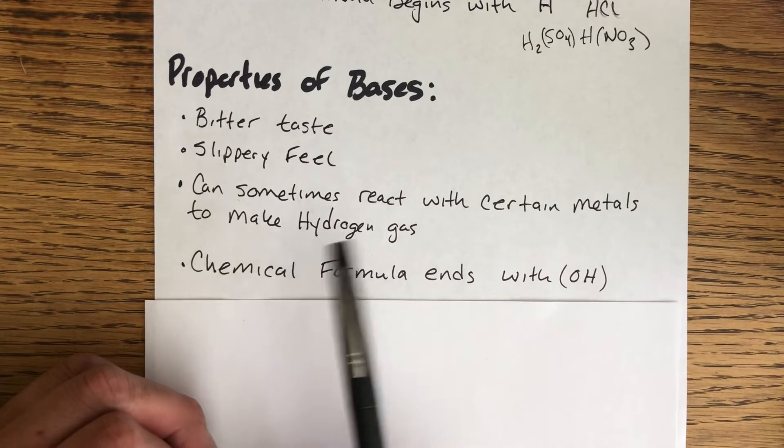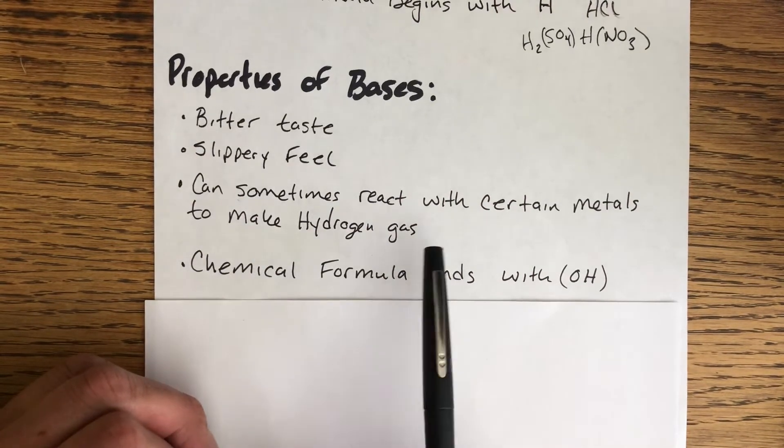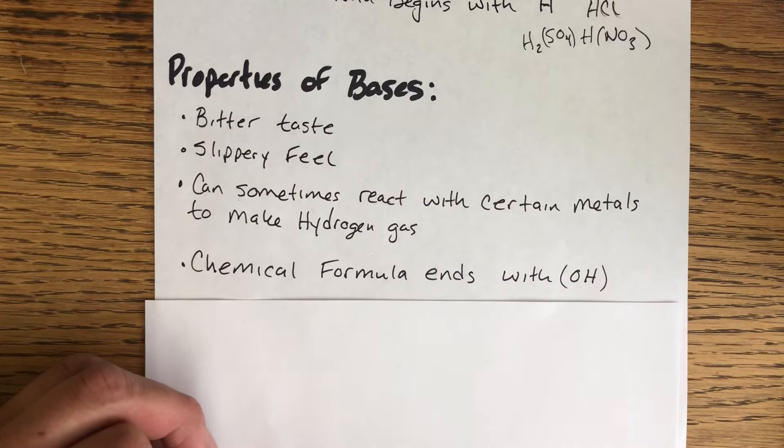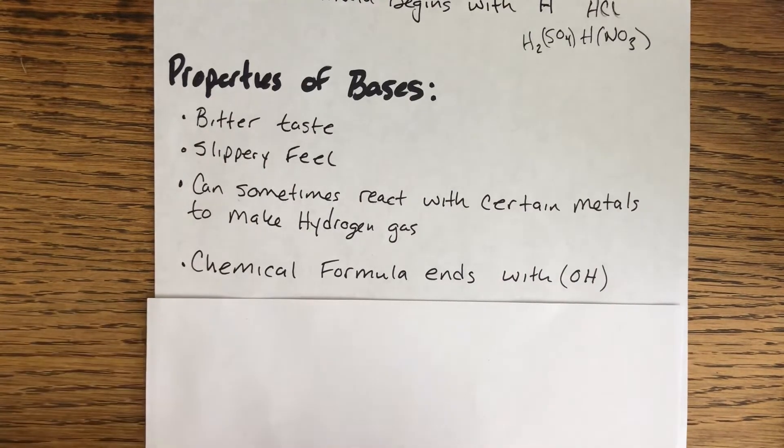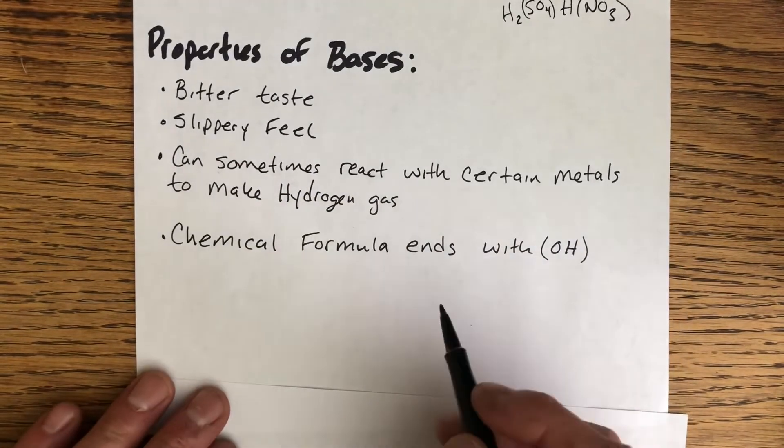Regarding the litmus paper here, bases will turn the red litmus paper into blue litmus paper, so there's a color change indicator. We'll talk more about that stuff. The chemical formula for Arrhenius bases always ends with OH.